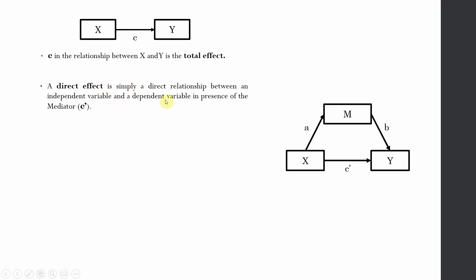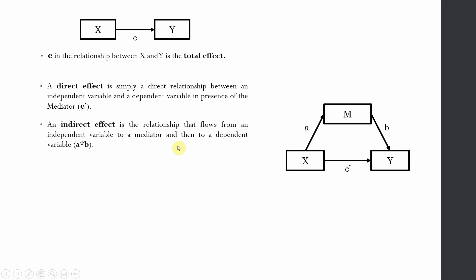A direct effect is simply a direct relationship between an independent variable X and a dependent variable Y in presence of the mediator, and this is referred to as C complement. An indirect effect is the relationship that flows from an independent variable X to the mediator M and then to the dependent variable. The influence of X on Y through M is your indirect effect, calculated by the multiplication of A with B.